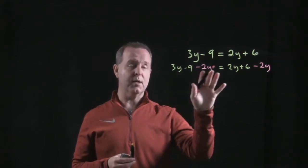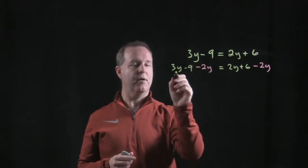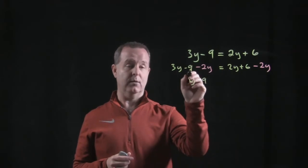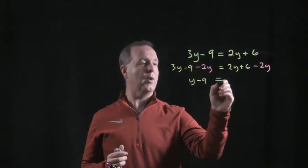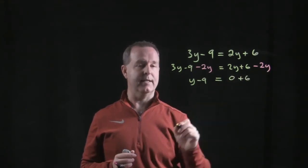On the left side, 3y take away 2y is y. I still have that minus 9. On the right side, 2y take away 2y is 0, and then I have that 6. So y minus 9 equals 6.